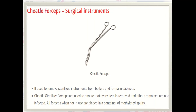Next come the Cheatle forceps, used to remove sterilized instruments from Waller's and formalin cabinets. Their purpose is to ensure that every item is removed without contaminating the remaining sterile instruments. All forceps when not in use are placed in a container of methylated spirits.